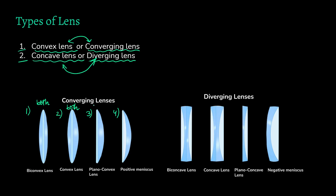In case 3, only one surface is spherical, because this surface is plain — not spherical. Spherical means it is curved like a crescent moon shape, curving outwards or going inwards. This side is a plain side, so here there is only one spherical surface. In case 4, again there is only one spherical surface because this side is also plain.